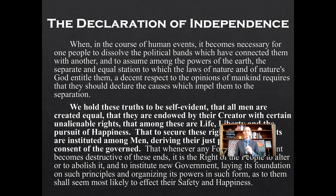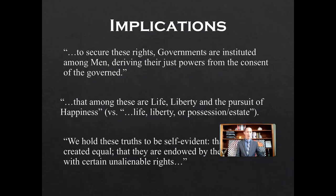The most important part of the Declaration of Independence is the first part of the second paragraph: 'We hold these truths to be self-evident that all men are created equal, that they are endowed by their creator with certain unalienable rights, that among these are life, liberty, and the pursuit of happiness. That to secure these rights, governments are instituted among men deriving their just powers from the consent of the governed.' From that one passage we get the most important ideas and the framework for what the United States will become, because the implications are profound.